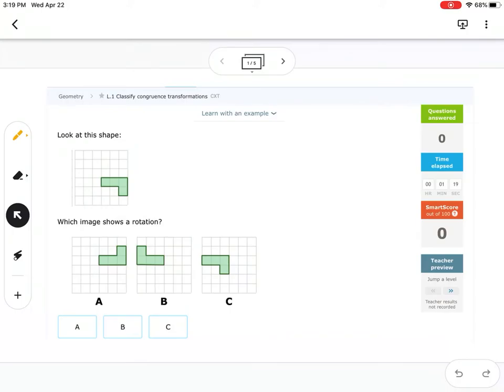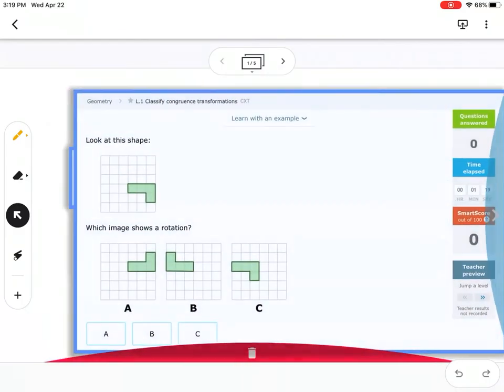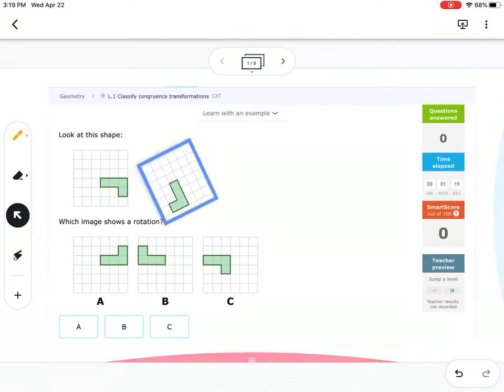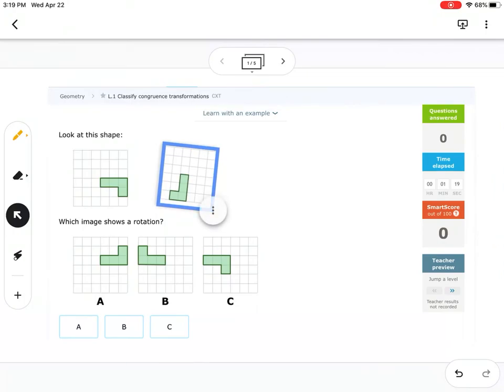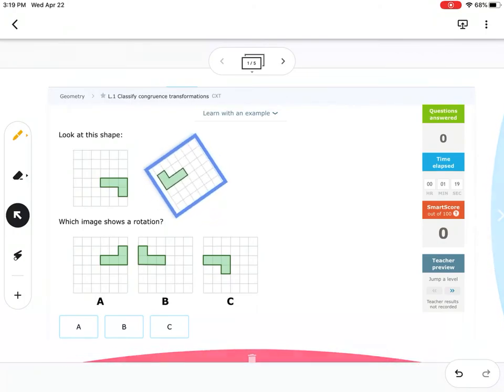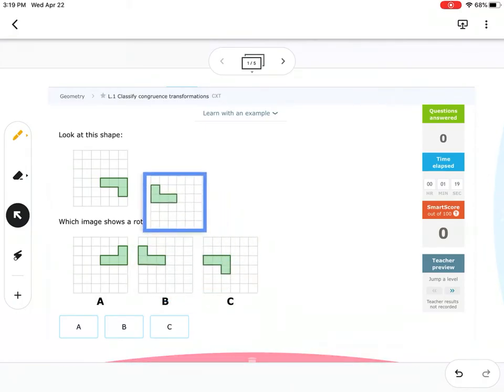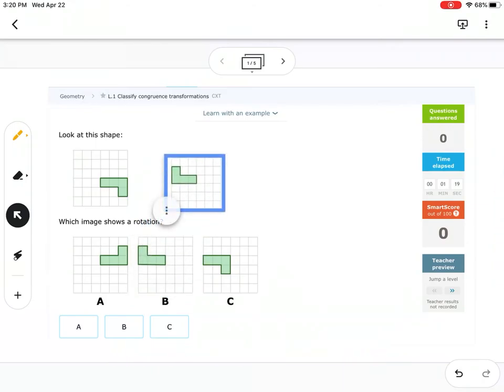So this one says, which image shows rotation? And so here I have, let's see, this one's an exact copy. So a rotation pretty much is when you turn it, right? That's like the activity we did in class on Google Classroom. And so you could see that this one, B, does show this when it's turned. So this is a potential right answer.